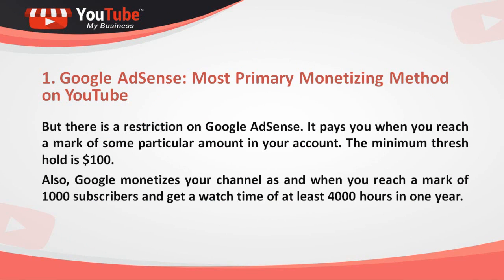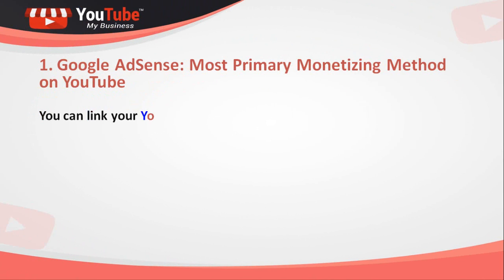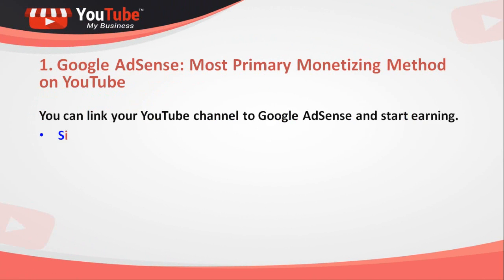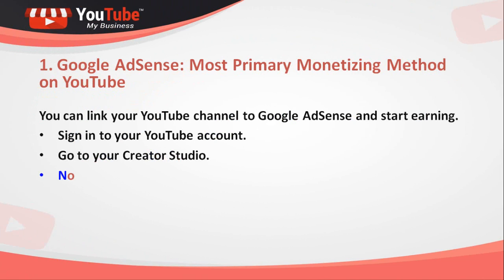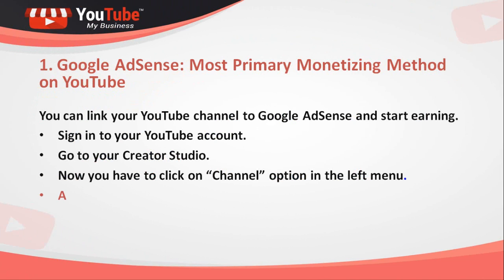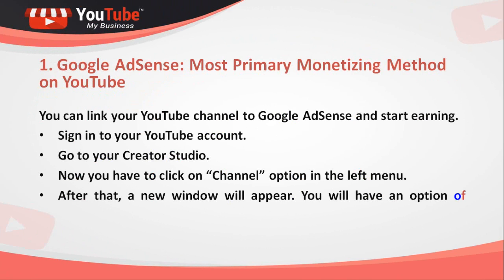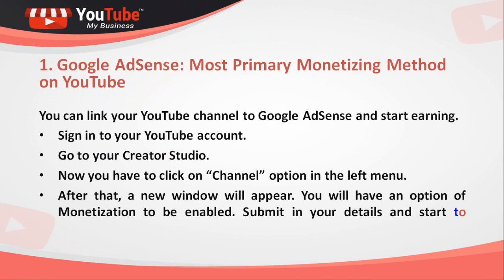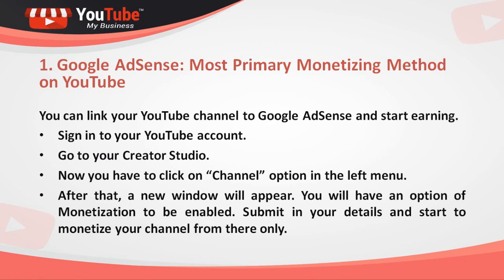Google also monetizes your channel once you reach 1,000 subscribers and get a watch time of at least 4,000 hours in one year. To link your YouTube channel to Google AdSense and start earning, sign in to your YouTube account, go to your Creator Studio, and click on the channel option in the left menu. A new window will appear with an option to monetize. Submit your details and start monetizing your channel from there.